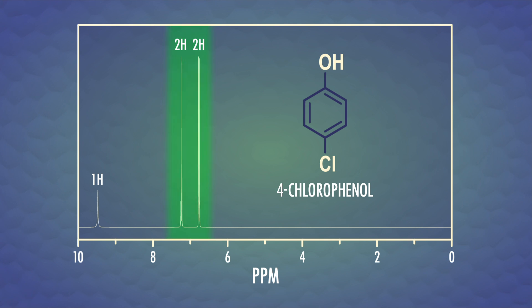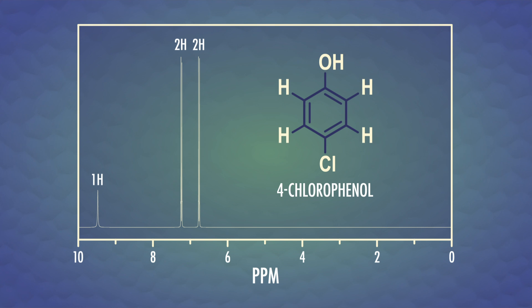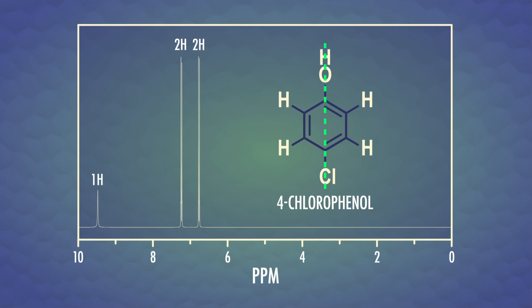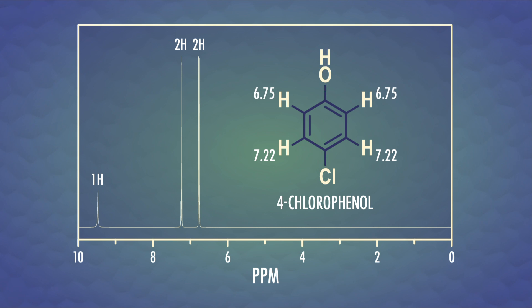There are two peaks in this region, each with an integral of 2, representing 2 protons. Looking at the structure of 4-chlorophenol, we can see there are 4 protons on the aromatic ring, but we only see two peaks in the NMR spectrum because this compound is symmetrical. If you put a mirror through the middle of the ring, the protons are effectively the same on both sides — they're chemically equivalent. Specifically, the two protons near the chlorine are equivalent to each other, and so are the two protons near the hydroxide. The chlorine and hydroxide have slightly different shielding effects, which is why we see two peaks, each with an integral of 2.